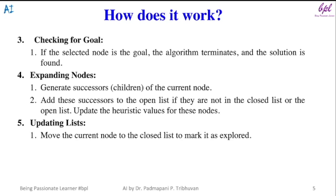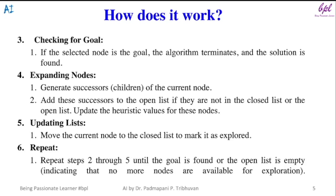Next step is updating list. Move the current node to the closed list to mark it as explored. Last step is repeat. Repeat steps 2 through 5 until the goal is found or the open list is empty, indicating that no more nodes are available for expansion.